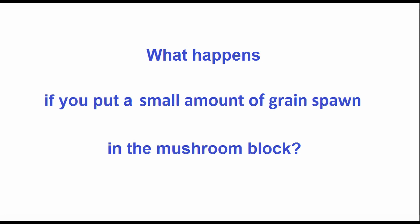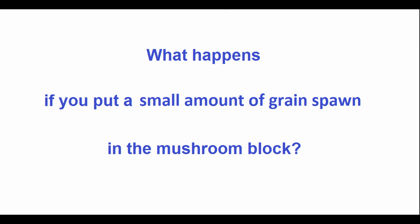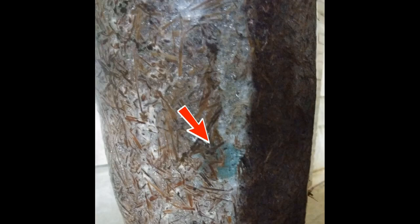What happens if you put a little spawn in the mushroom block? There will be fewer growth points and the growth of hyphae will slow down. In areas where oyster mushroom hyphae have not grown, spores of pathogenic microorganisms will hatch. If they grow at a faster rate than oyster mushroom hyphae, the substrate may be damaged. If the spores of pathogens grow more slowly, the hyphae may suppress the development of mold, but this will take time and effort, so the yield will be lower.